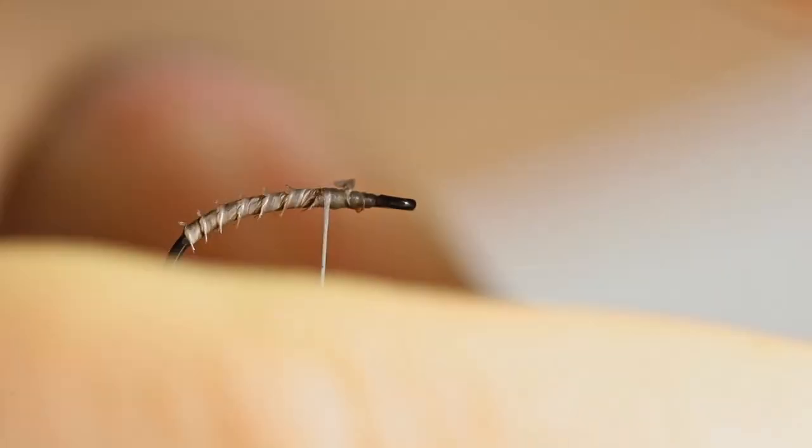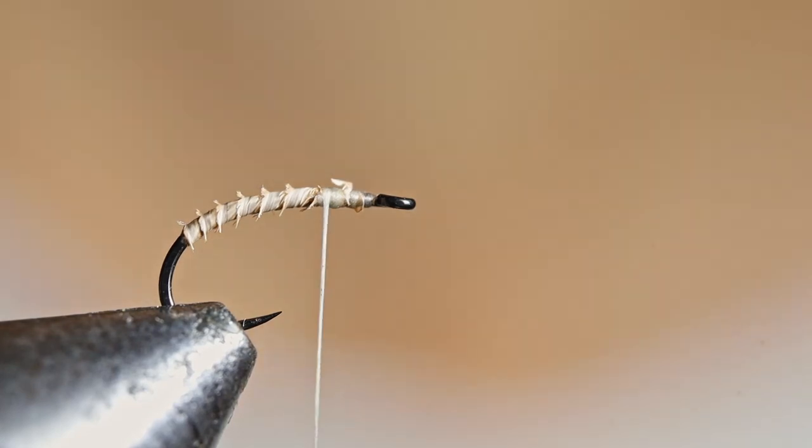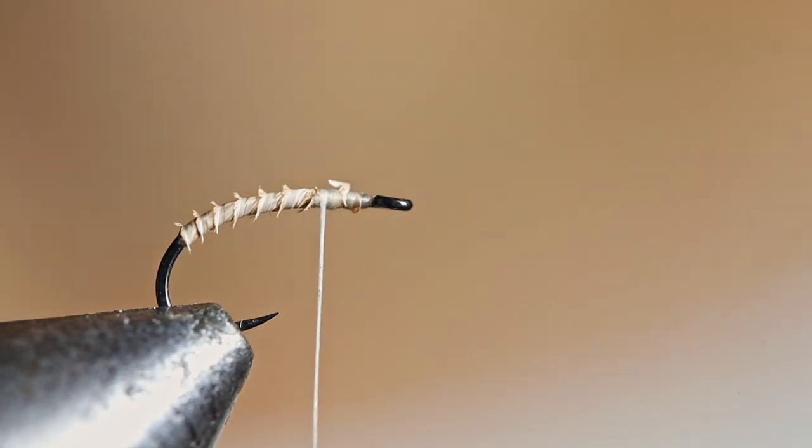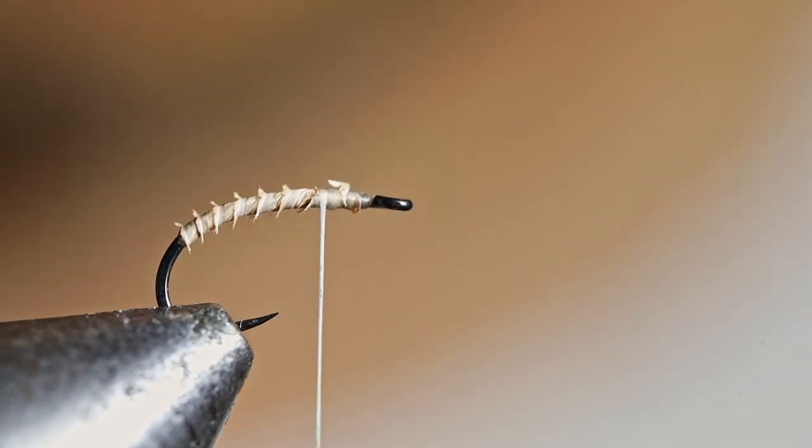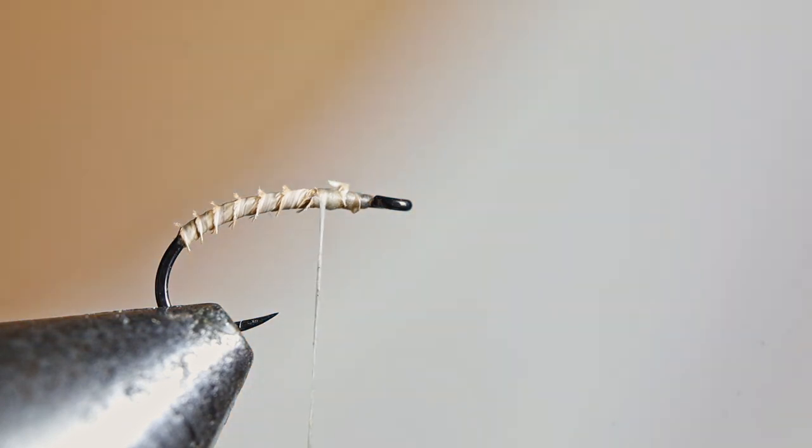Now, there are a couple of ways to do the CDC for this fly. And the first way I'm going to show you is the simplest, but it also requires CDC with certain characteristics. So quite sort of short, fluffy CDC feathers, but with fairly long fibres. And that is something that isn't the easiest to find.